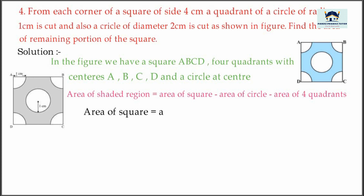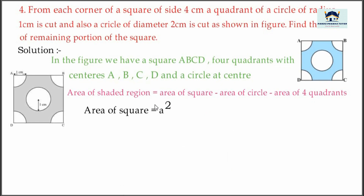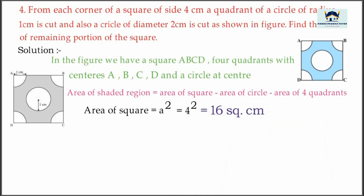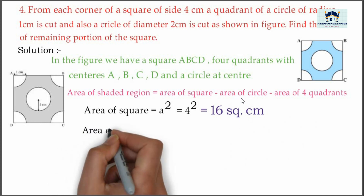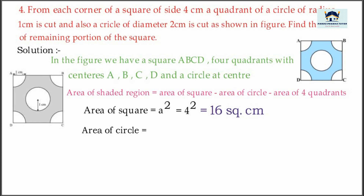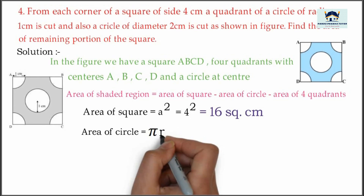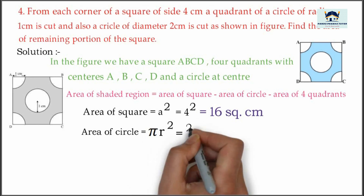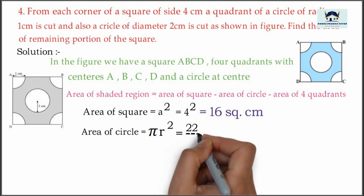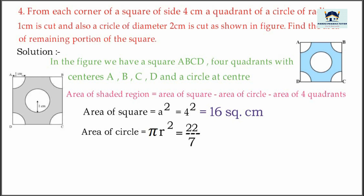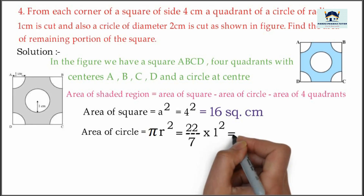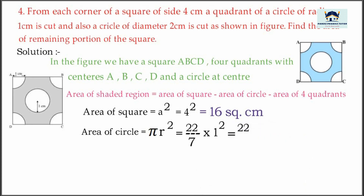Now we will find area of square using the formula: side squared, which is equal to 4 squared, giving 16 square centimeter. Now we will find area of circle, which is equal to pi r squared, which is equal to 22 divided by 7 into 1 squared. Since r is 1 centimeter, 1 squared is 1, therefore the answer is 22 divided by 7.